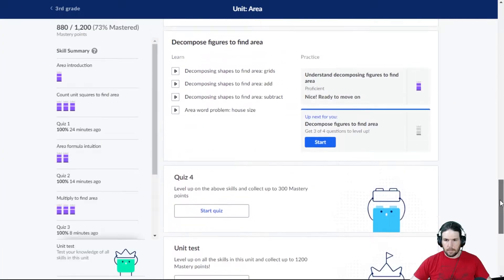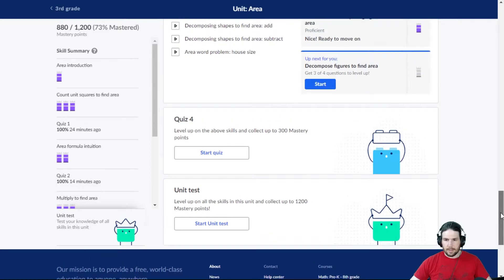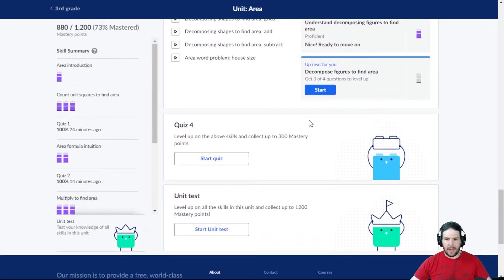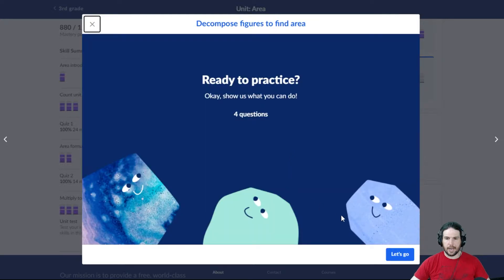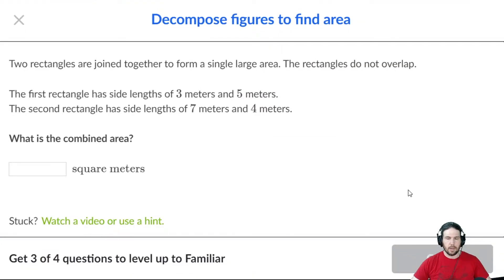How are we doing? I think we'll make it to the unit test. We might even go further than that. We'll find out. Decompose figures to find area. So some more practice on this, except this time we don't get, at least in this case, we don't get a diagram.